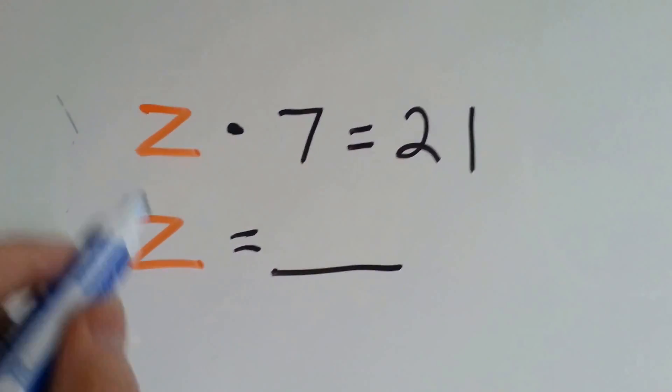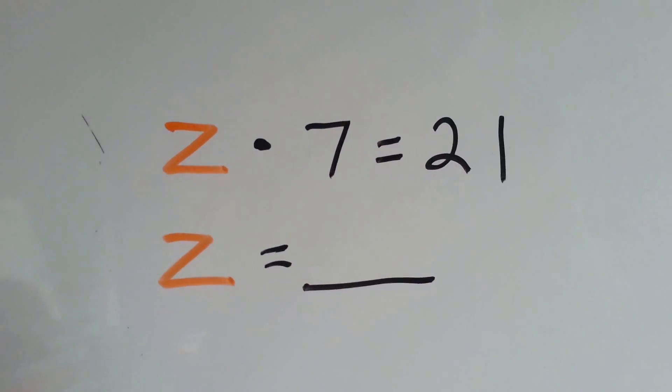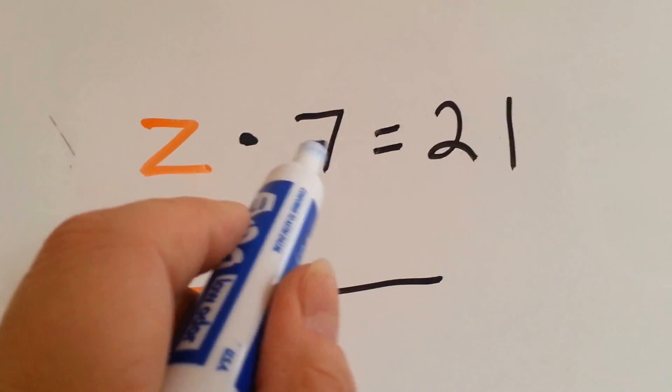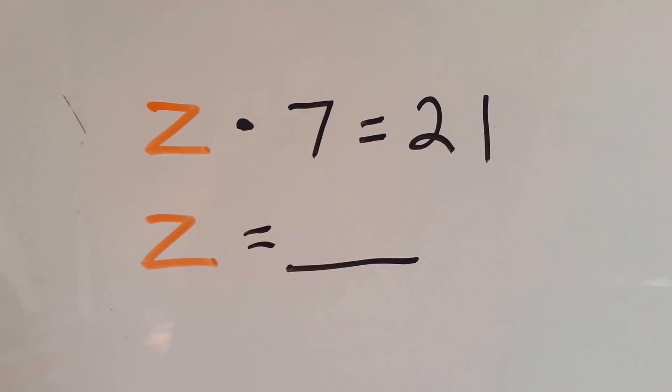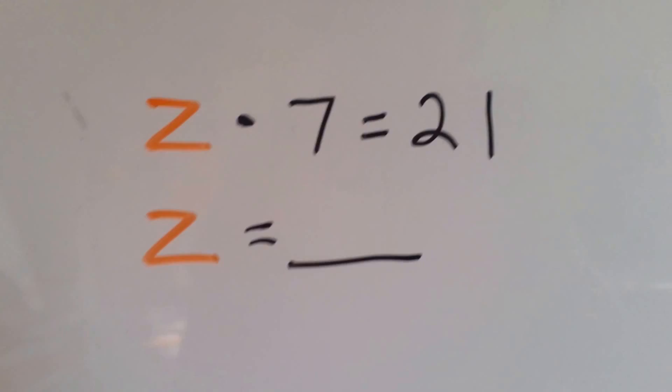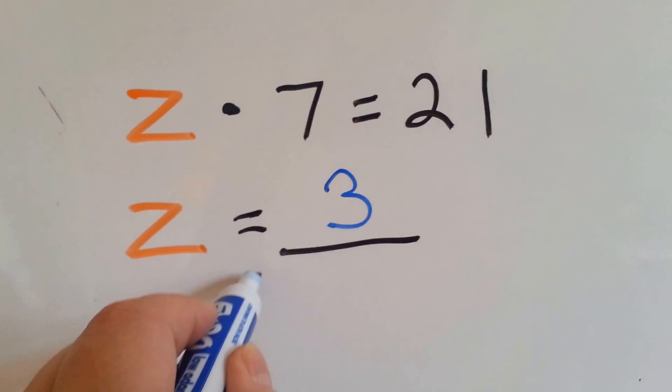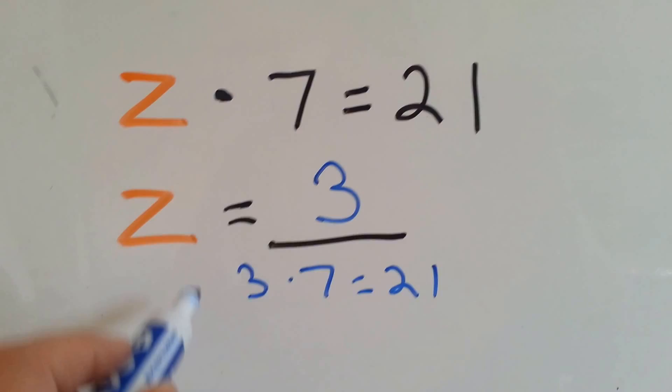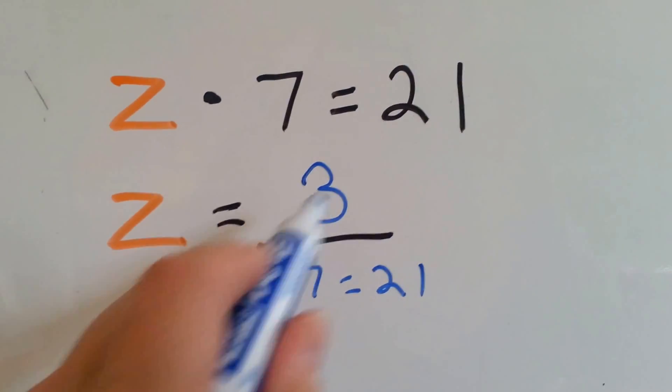Let's try this one. Now the variable is a z. It's the letter z. So some number times 7 is equal to 21. Do you know your 3 times table? 3 times 7 is 21. So z is equal to 3.